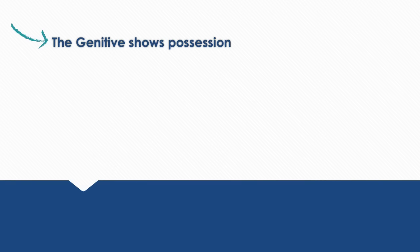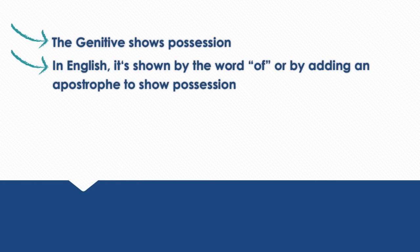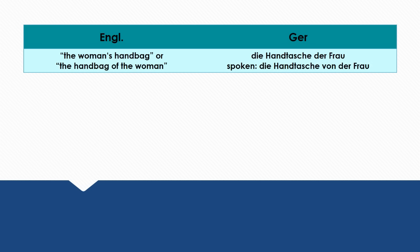The most important thing you need to know is that the genitive shows possession. In English, it's shown by the word 'of' or by adding an apostrophe to show possession. For example, in English you would say 'the woman's handbag' or 'the handbag of the woman.' And in German, you say 'die Handtasche der Frau.'